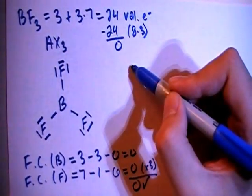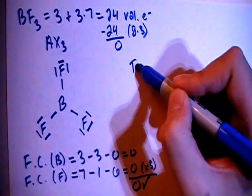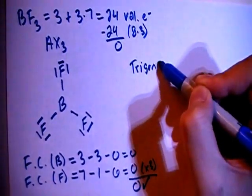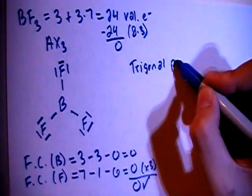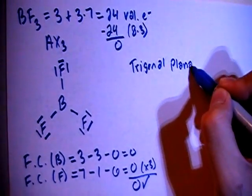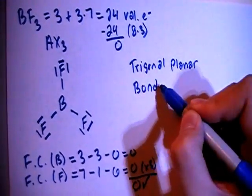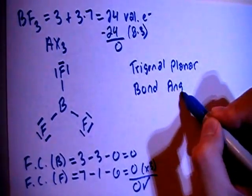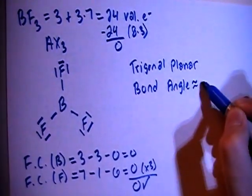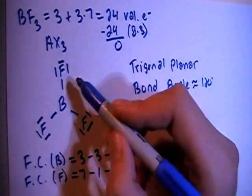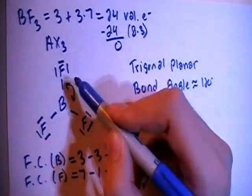So in terms of shape, with the AX3 structure, that means that this will have a trigonal planar shape. And when you have the trigonal planar type of structure, the bond angle is going to be approximately equal to 120 degrees, so this angle right here.